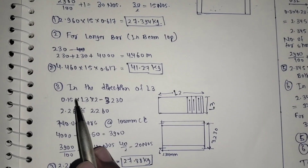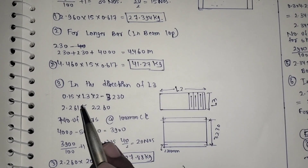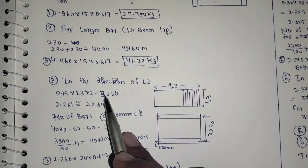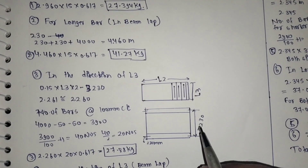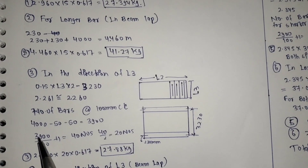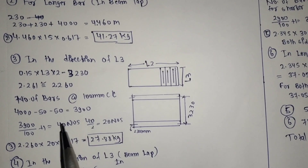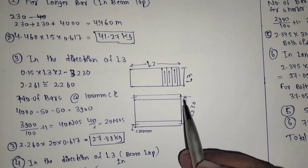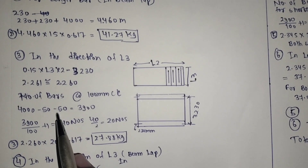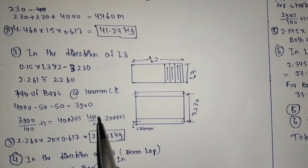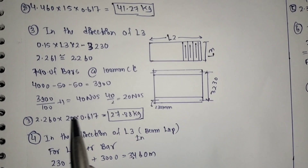So 0.15 into L3 into 2 minus 3230, because from this beam to this point is 3230 mm. For the number of bars in the longer direction, we divide by spacing: 3900 mm (after deducting clear cover from both sides) divided by 100 plus 1 gives 40 numbers. Then divide by 2 for alternate provision, giving us this cutting length in the direction of L3.